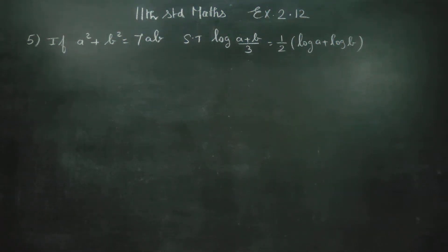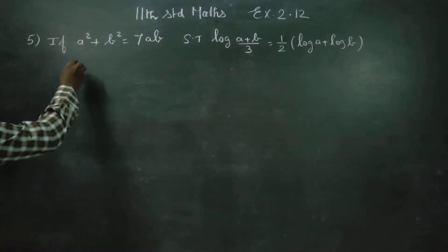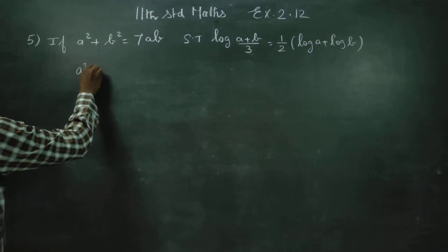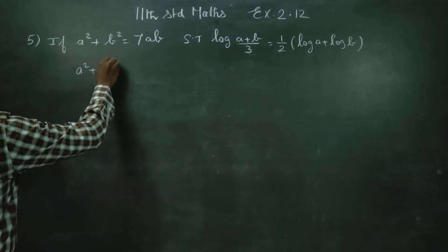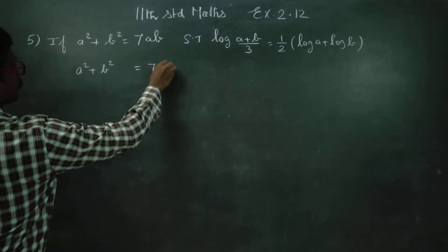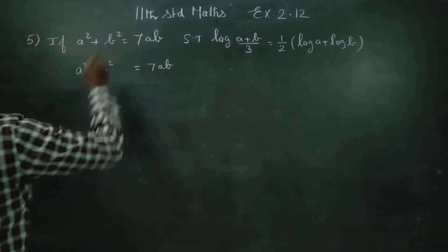Dear students, in exercise number 2.12, sum number 5, it's given that a squared plus b squared is equal to 7ab.